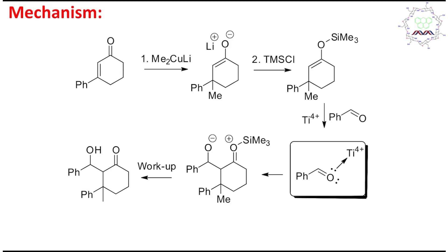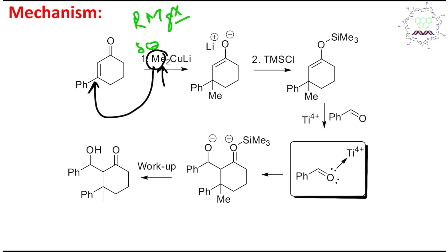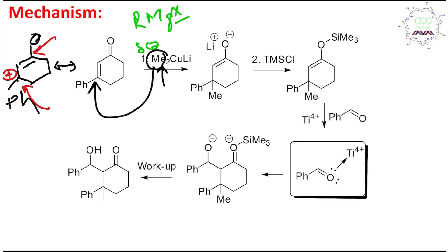The first reagent is a Gilman reagent. In this case, the methyl group acts as a nucleophile. This is delta-minus — it is not as ionic compared to Grignard or alkyl lithium reagents. That's why the methyl group selectively attacks the beta position. Due to resonance, the beta carbon is a softer electrophile compared to the carbonyl carbon, which is harder because it's directly attached to oxygen. So the attack happens at the beta carbon, ultimately producing a lithium enolate derivative.